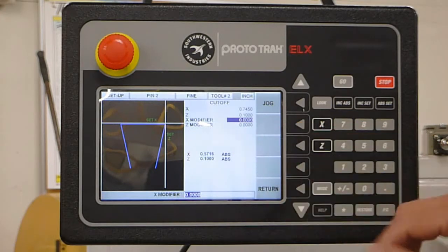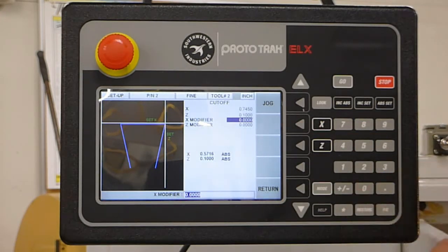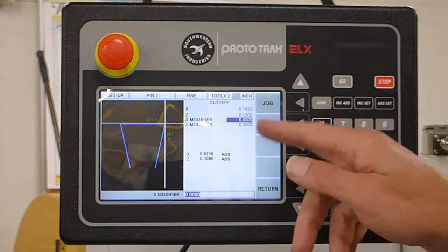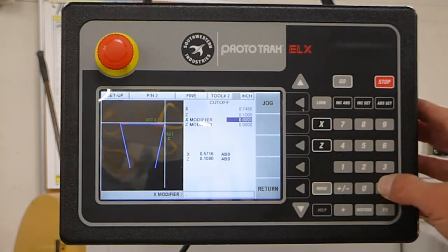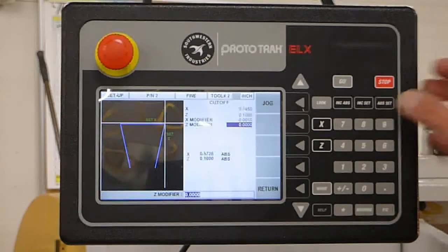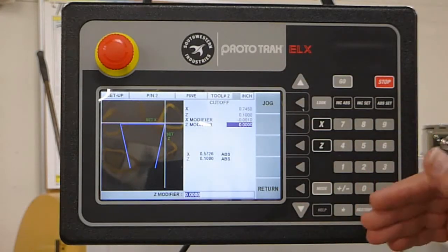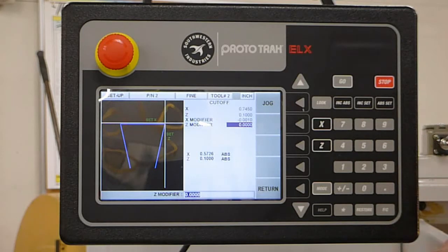What this x modifier and z modifier is for is after you run your first part, if you notice the diameter is say 0.001 inch too big, you would simply put a negative 0.001 in here and it will adjust it accordingly without affecting any of the other tools before it or after it.